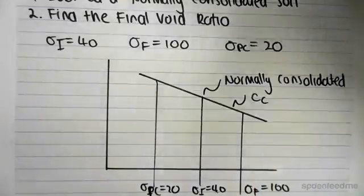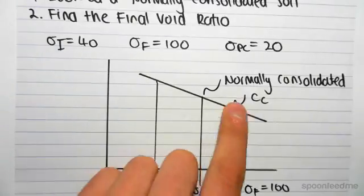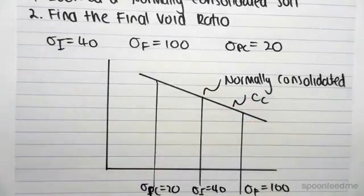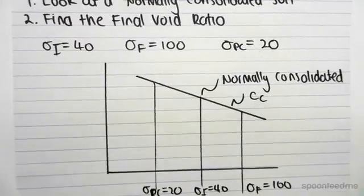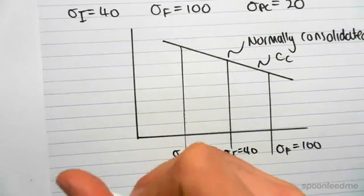In the previous video, we used CR, but because our soil is normally consolidated, we need to use CC. And to find the final void ratio, it's the exact same process. So let's just make up an example.